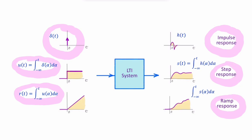Conversely, we can find each of these by differentiation. So the impulse response would be the first derivative of the step response, and the step response would be the first derivative of the ramp response.